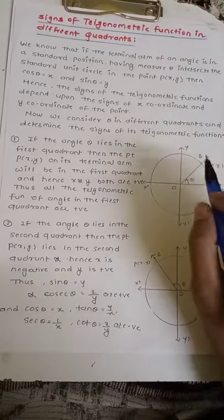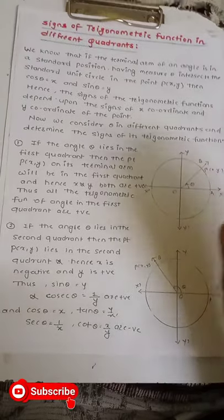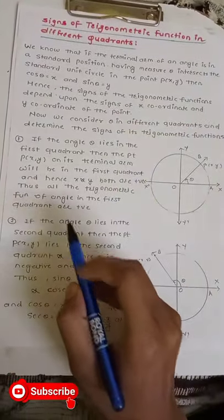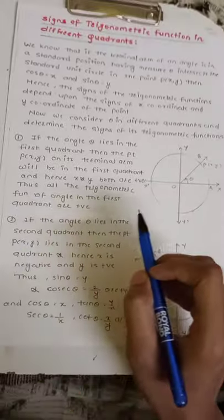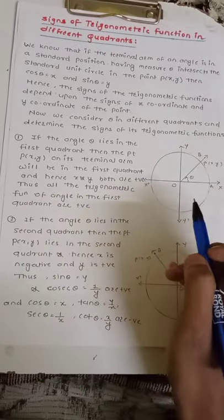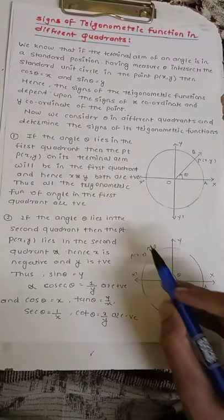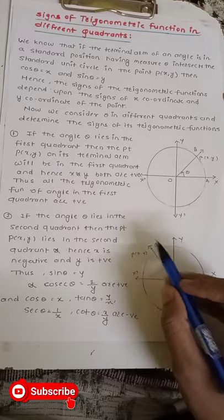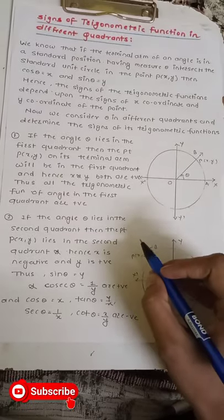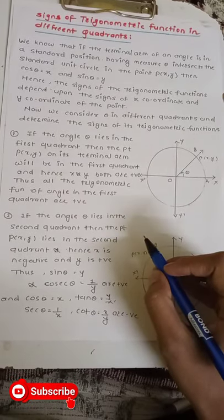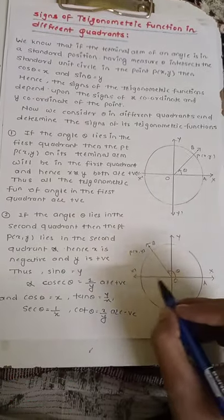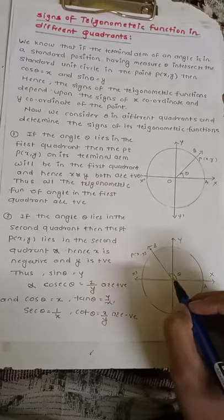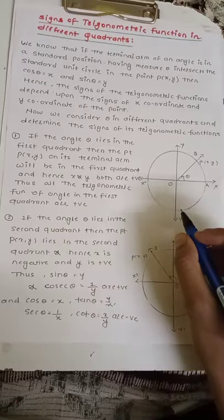In the second case, if the angle θ lies in the second quadrant, then the point P(x, y) also lies in the second quadrant, and hence the value of x is negative and the value of y is positive.